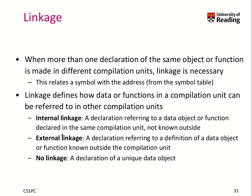There are three types of linkage. The first is internal linkage, which means you stay within the compilation unit and the object or function is not known outside the compilation unit. So that's rather easy: you have one C file, you put in all the include files, and all the information about the declarations and definitions is known inside — that's internal linkage.